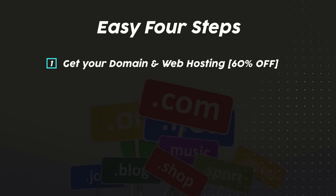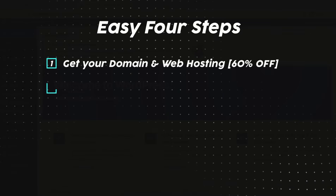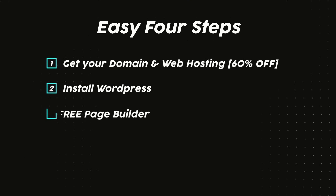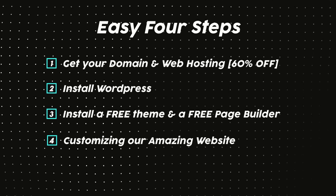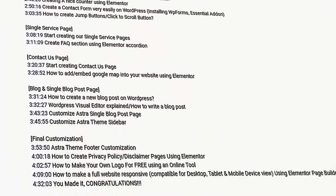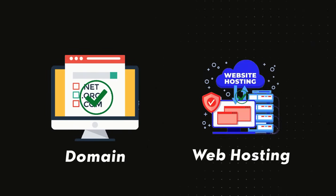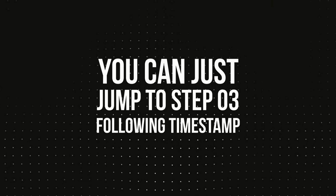We will be creating our amazing landing page in four easy steps. First, how to get your domain name and web hosting — I'll also provide a 60% discount link. Then how to install WordPress, then how to install a free theme and free page builder, and finally we'll start creating our landing page. I'll add timestamps in the description so you can jump to any part you need, and skip steps 1 or 2 if you already have hosting and WordPress.